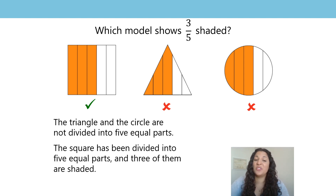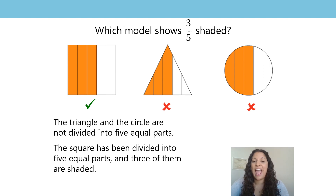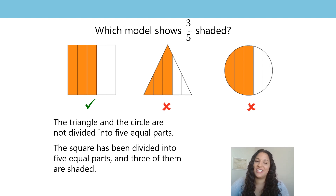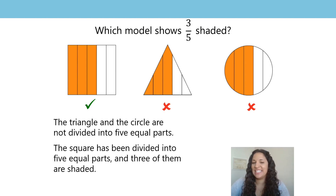The square has been divided into five equal parts and three of them are shaded. Did you get that at home? The square is showing three-fifths shaded. The triangle and the circle are not, because they have not been divided into five equal parts. Well done if you got that at home.